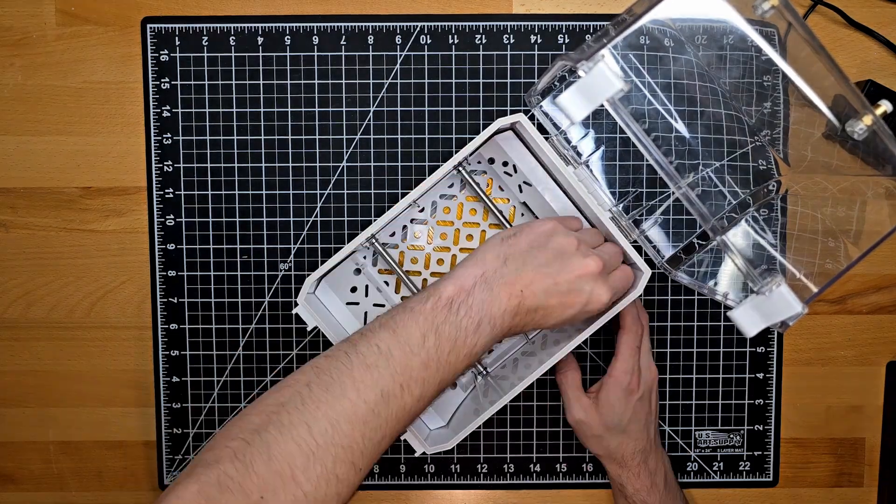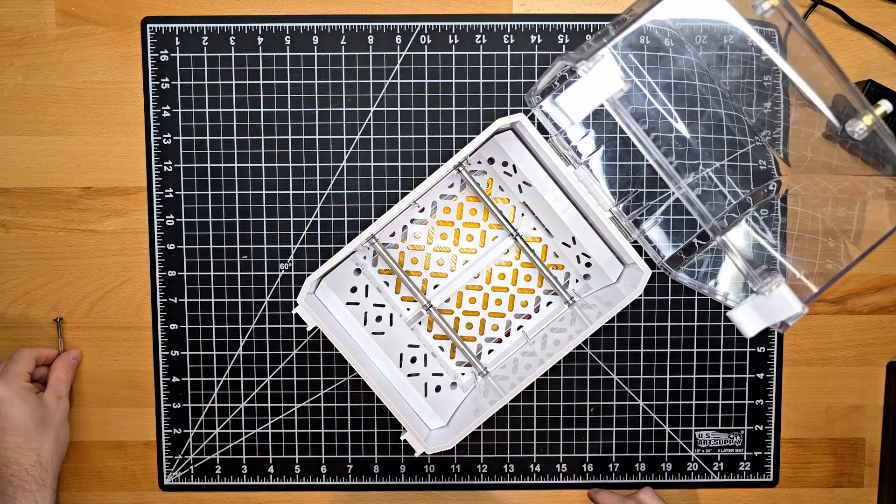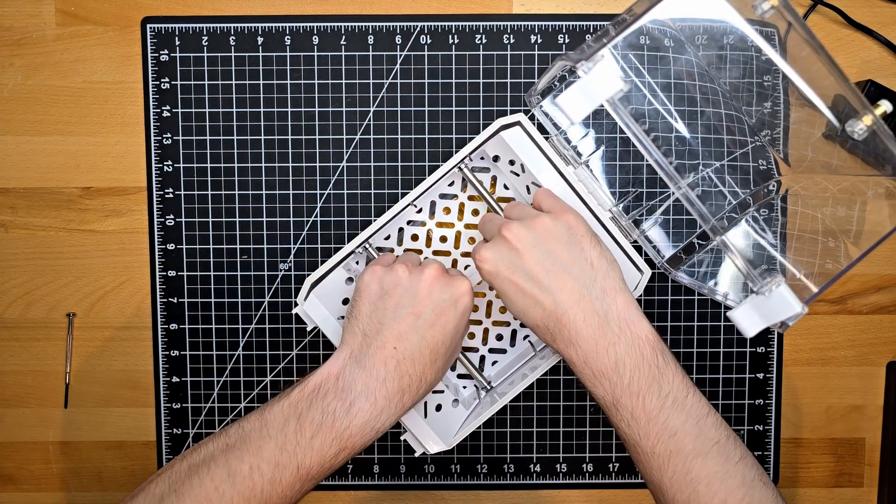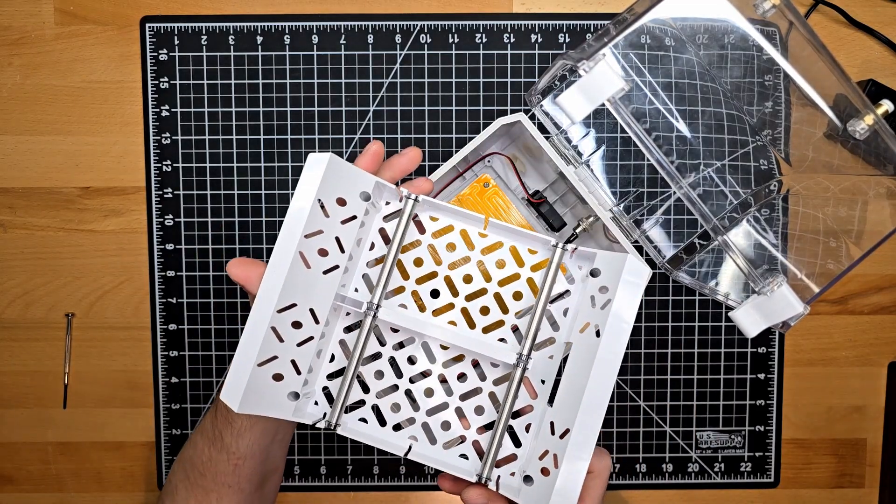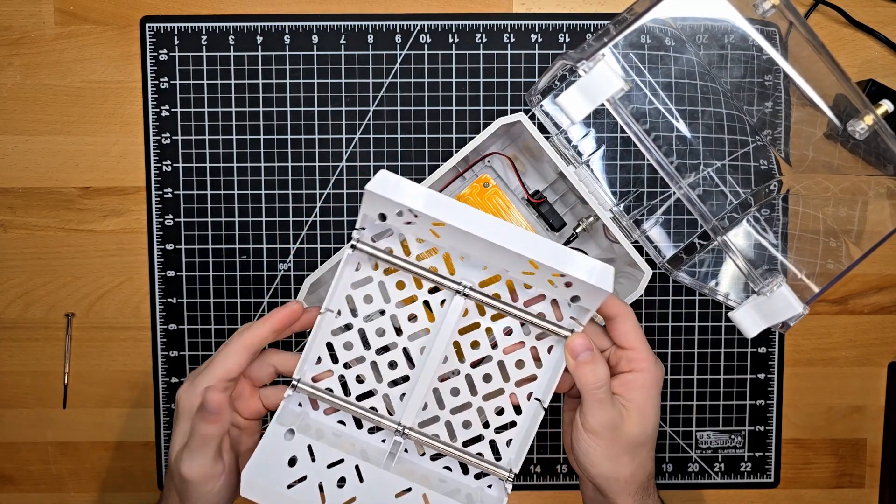Once those four have been disengaged I'll simply leave the hardware within the channels so that they don't bounce off the table and get lost in the abyss of a carpet. And I'll take that base plate and set it aside.